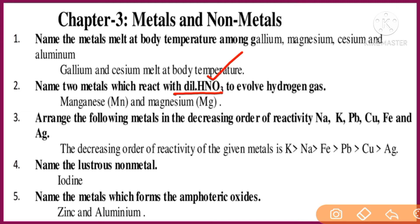Nitric acid is a strong oxidizing agent, which itself reduces hydrogen from its compound and releases water. However, manganese and magnesium react with very dilute nitric acid to release hydrogen gas. Remember these two metals — reacting with dilute nitric acid is an important question.